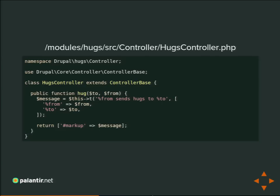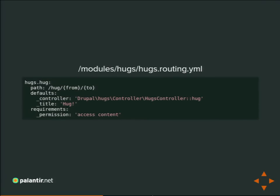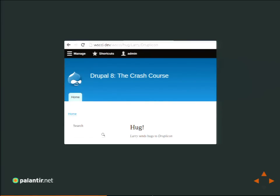Now we tell Drupal about it. We have a `hugs.routing.yaml` file which replaces `hook_menu`. We have our route with a name — all routes now have names, `moduleName.somethingMeaningful`. Our path is `/hug/{from}/{to}`, our controller is that class and method we just defined, `_title` is the page title, and you need the `access content` permission. Drupal will see this, a request comes in, matches to this route, instantiates that `HugsController` class, and calls the `hug` method. And there's our output — 'Larry sends hugs to DrupalCon.'